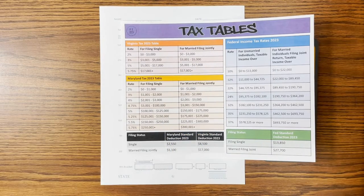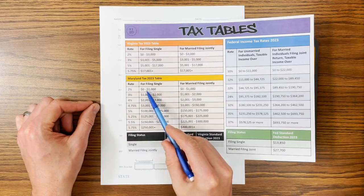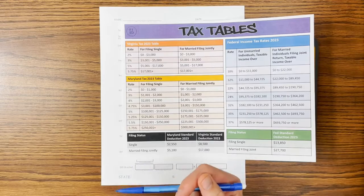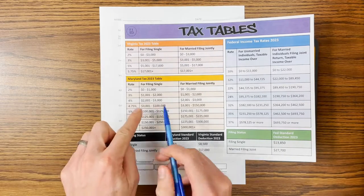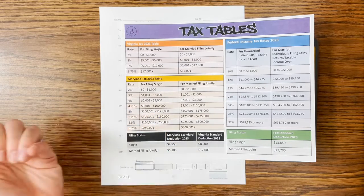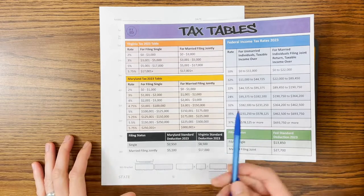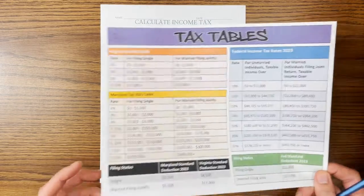There are eight income brackets used when calculating Maryland taxes. The first three are very small — the first $1,000, the next $1,000, and the next $1,000. So the first $3,000 of taxable income is taxed at lower percentages. Then there's a much larger bracket at 4.75%, followed by smaller brackets, and then everything else gets lumped into the highest tax bracket. The majority of people in Maryland are probably maxing out at that 4.75%.